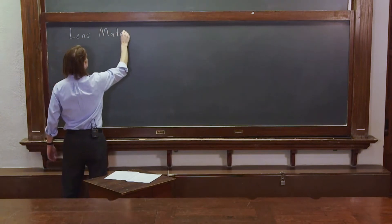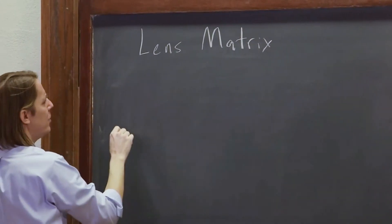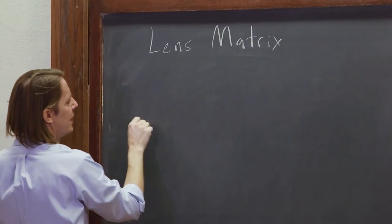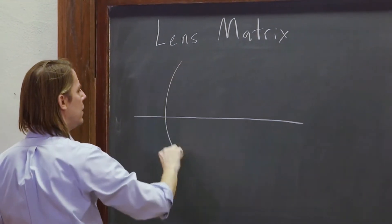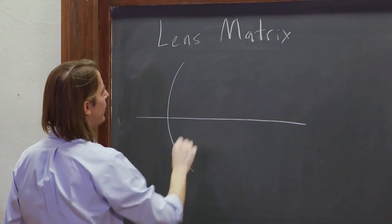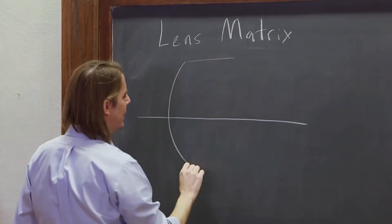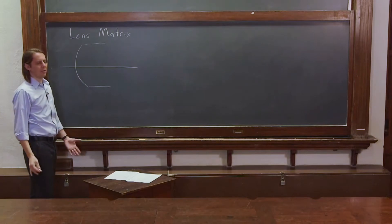So let's look at the lens matrix. If we had an optical axis like that and a curved surface like that and then a big thick part, let's not even assume a thin lens.